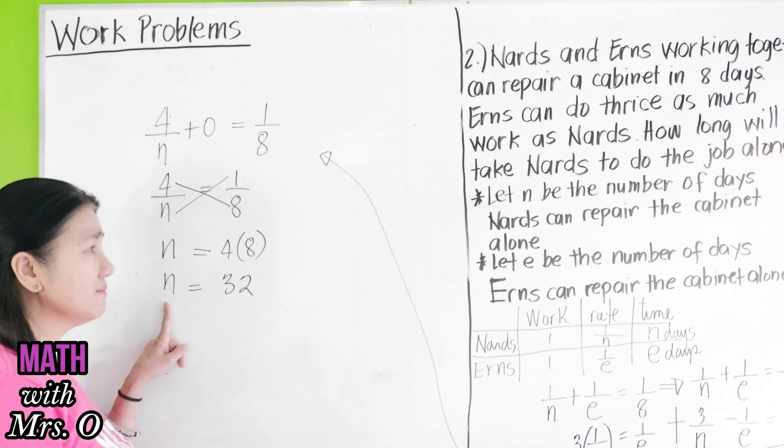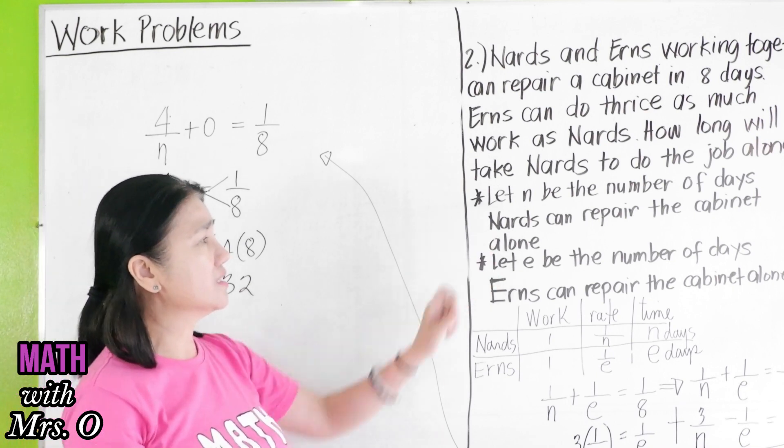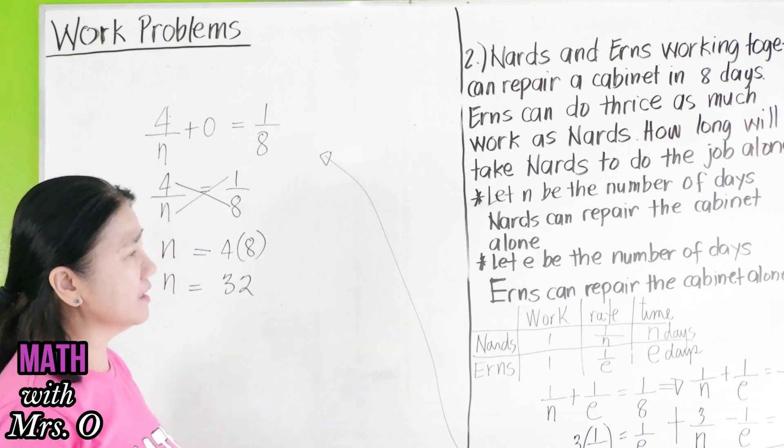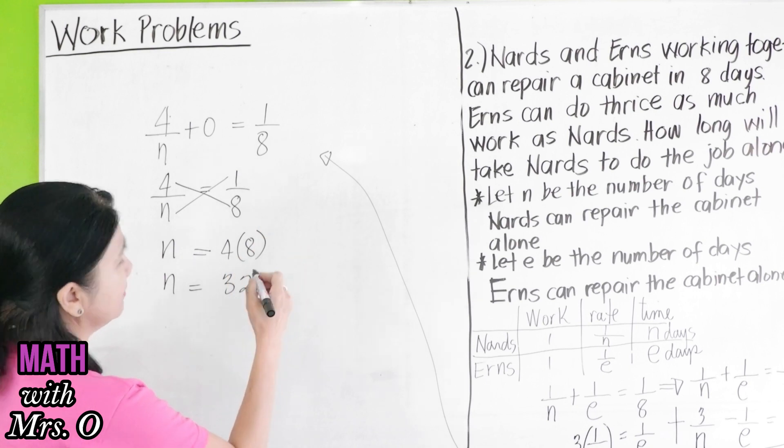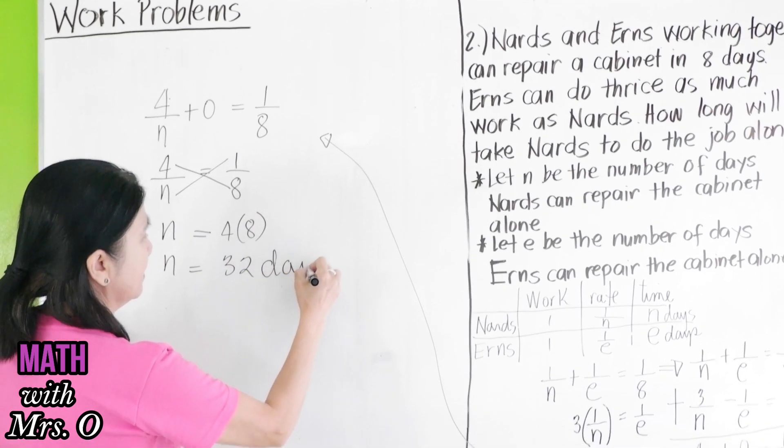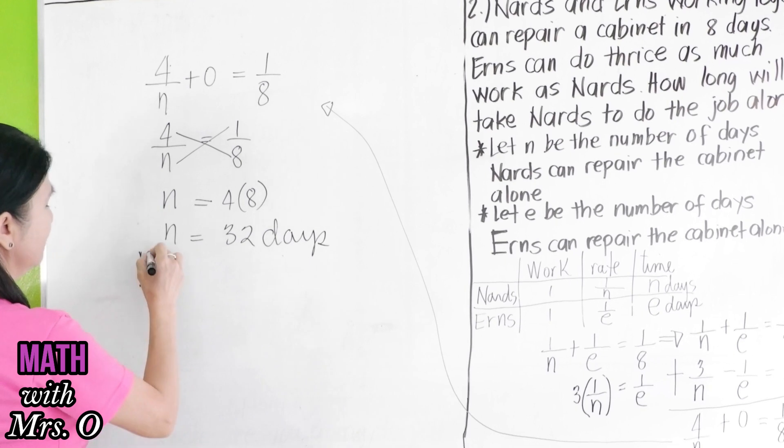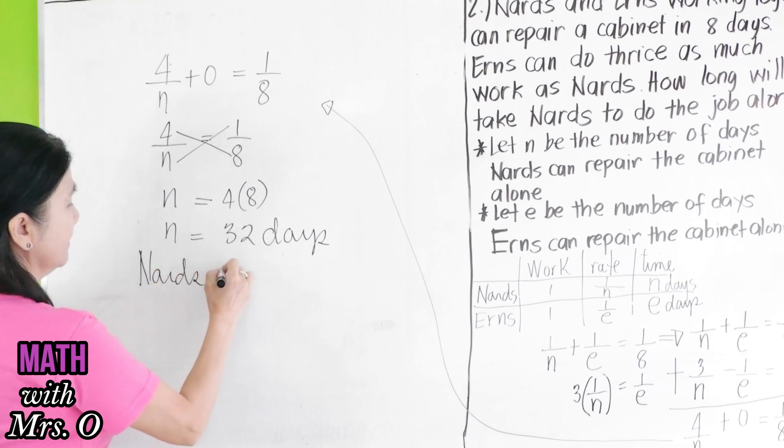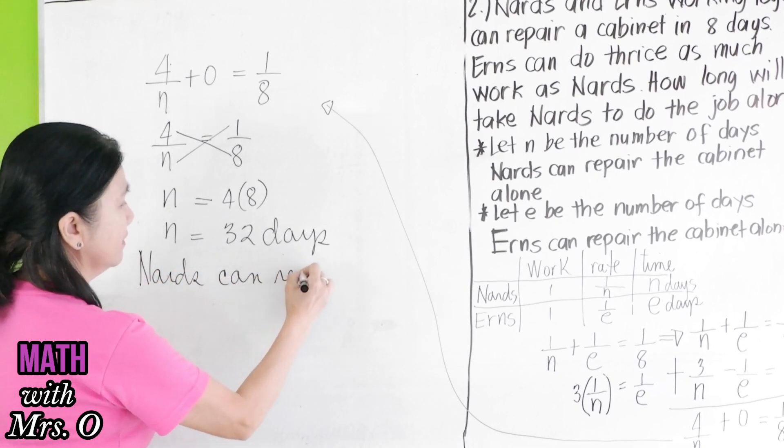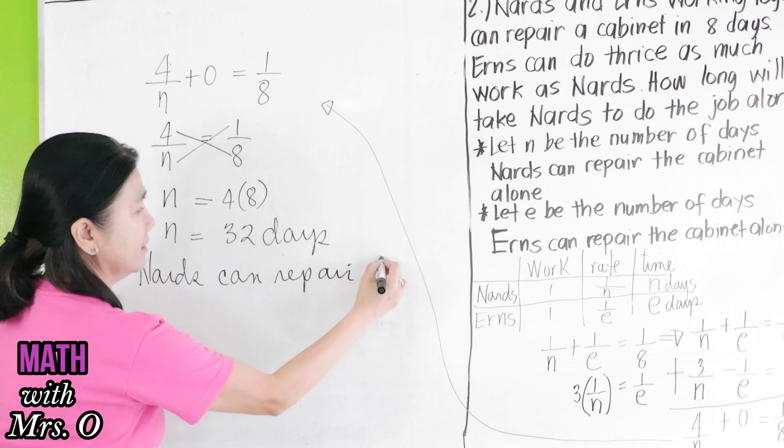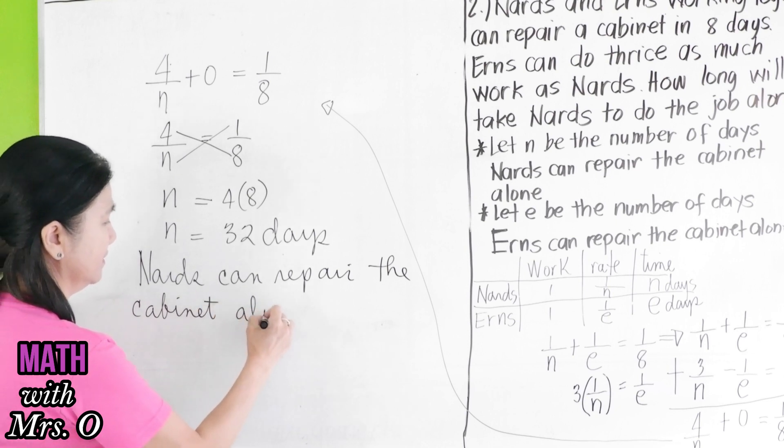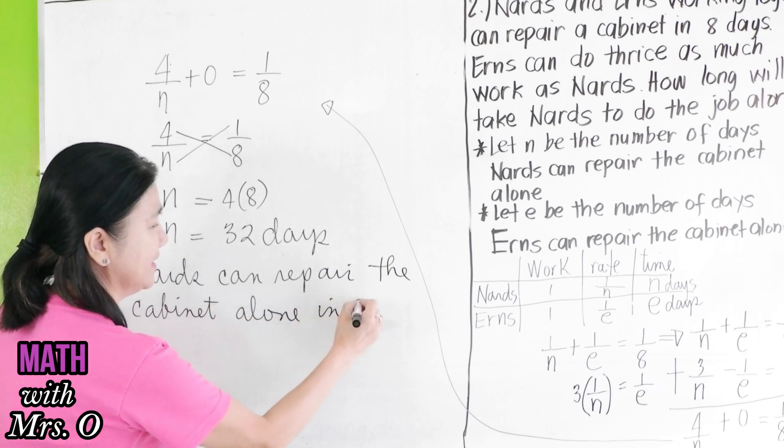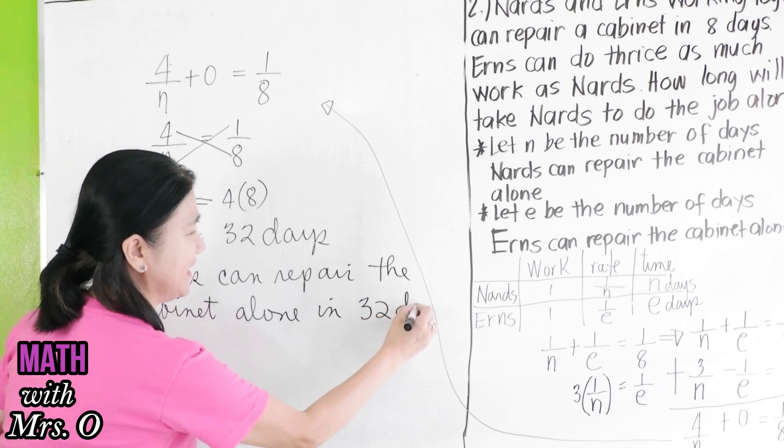So, N which is Nards, so Nards can repair the cabinet alone in 32 days.